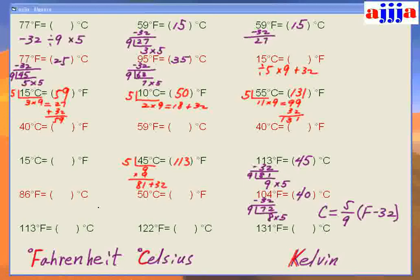Let's try this one — so easy! Divide by 5, which is 9, then times 9 — times 9 — which is 81, plus 32. The last digit is 3, and 8 and 3 is 11, so 113 degrees Fahrenheit.